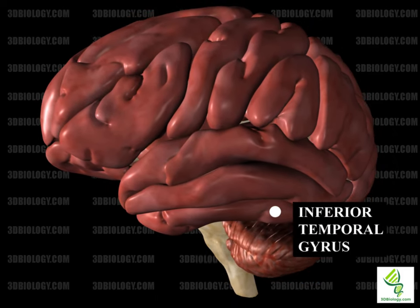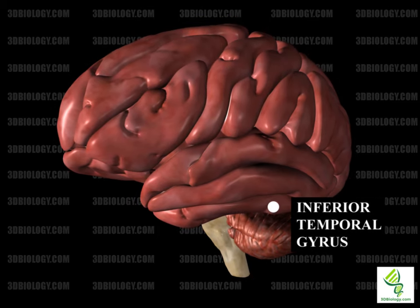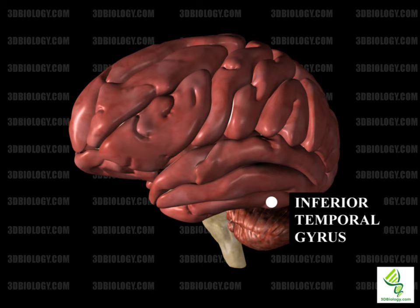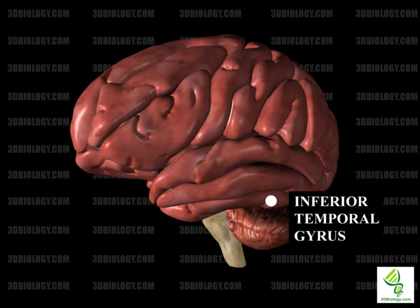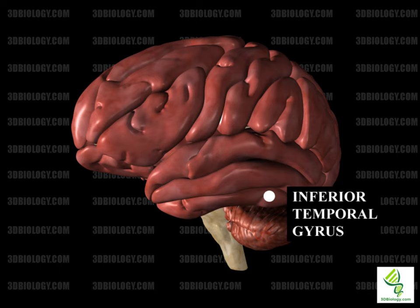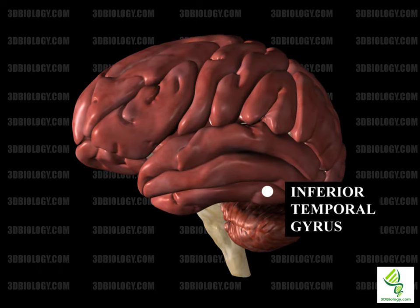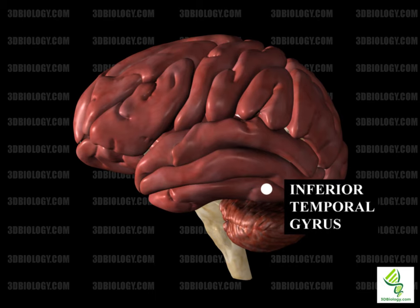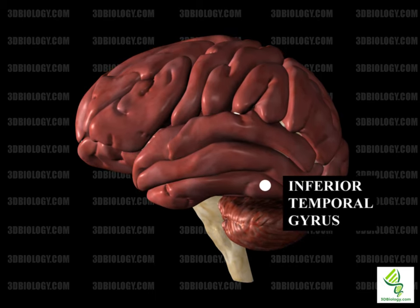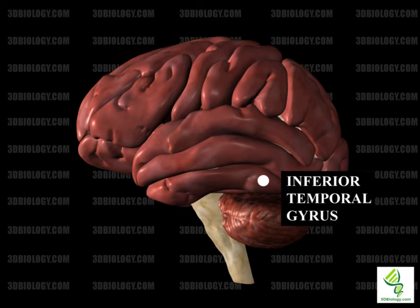The inferior temporal gyrus is the lowest of the gyri of the temporal lobe. It is separated from the middle temporal gyrus by the inferior temporal sulcus. The occipital temporal sulcus separates it from the fusiform gyrus. It is involved in visual stimulus processing and a level of object recognition based on form and color.